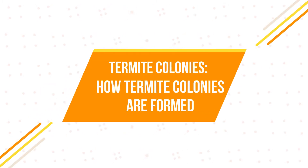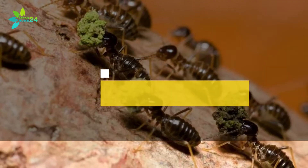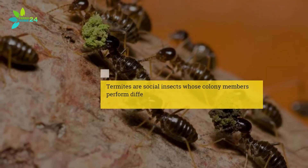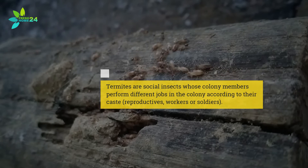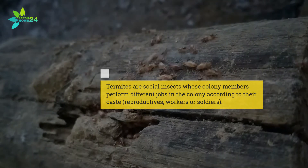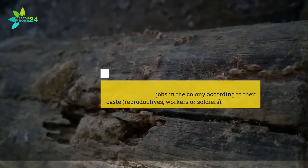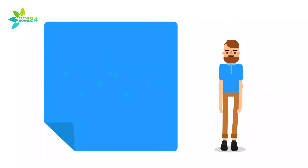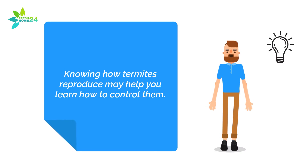Termite colonies: how termite colonies are formed. Termites are social insects whose colony members perform different jobs in the colony according to their caste — reproductives, workers, or soldiers. Knowing how termites reproduce may help you learn how to control them.